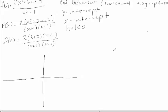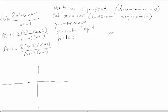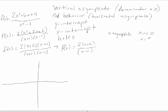The vertical asymptote occurs where the denominator equals 0. We have factors that are the same on the top and bottom, so we look at the reduced form, which is 2(x + 2) / (x − 1). The x + 1 factors cancel on top and bottom, giving us our simplified function. So the denominator equals 0 at x = 1, and that's our vertical asymptote at the line x = 1.